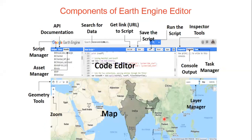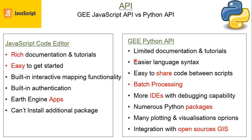This is a small screenshot of the JavaScript components — the components of the Earth Engine code editor. You can see the map where you display your results, the output console panel, and the area where you write your code. There are two types of API: JavaScript API and Python API. Most of you are already working in Python. JavaScript has rich documentation and tutorials on Google Earth Engine's own website, but for Python, there are only limited official documentation and tutorials available.